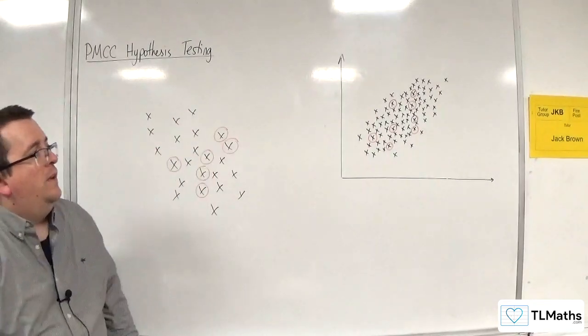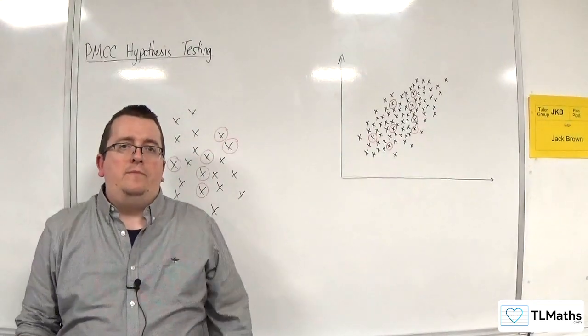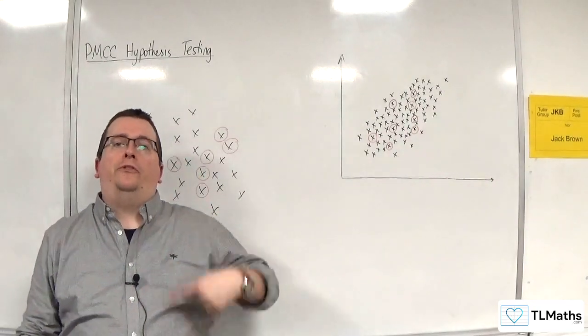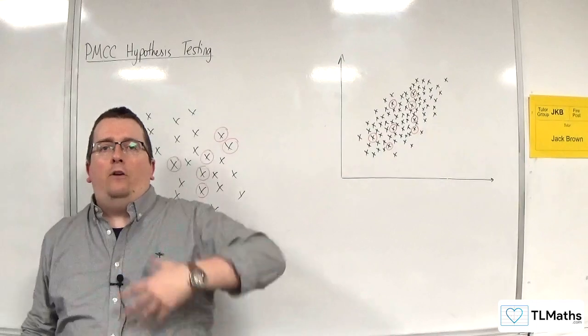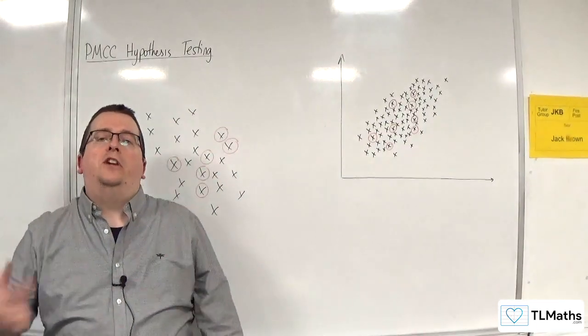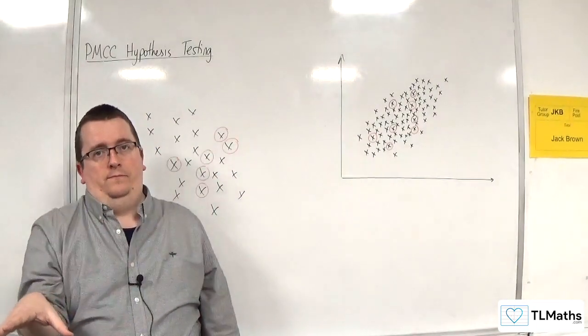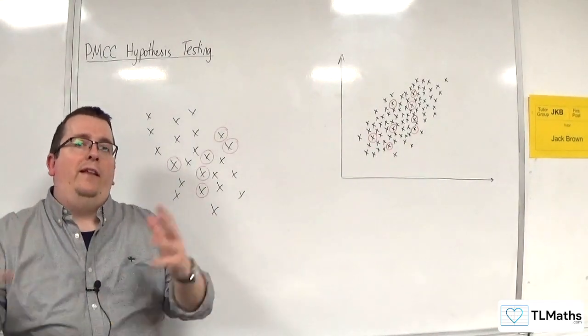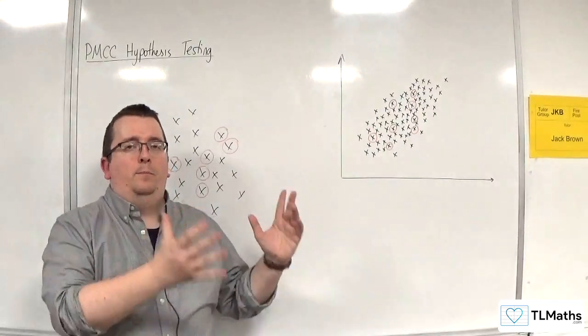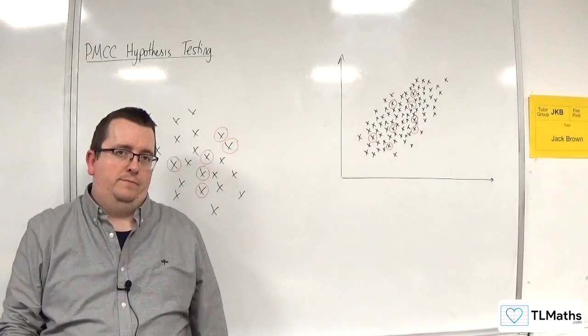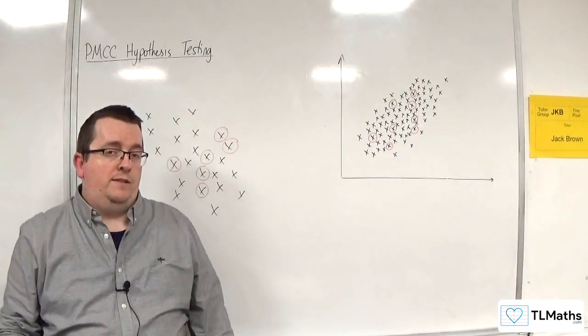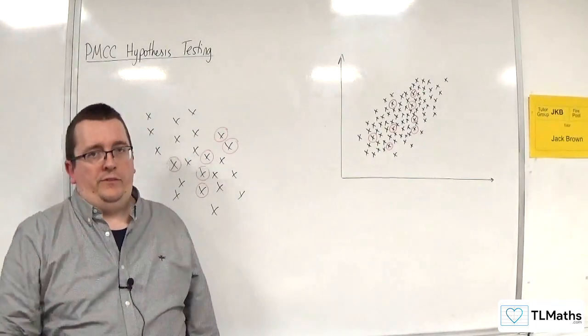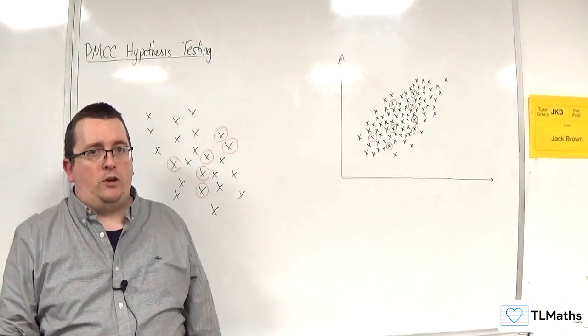So essentially, what we're looking at here is how strong a correlation from your sample, how strong does that need to be to convince you that the parent population is likely to be positively correlated or negatively correlated or if there is any correlation. That is the hypothesis test that we are going to consider in this section.